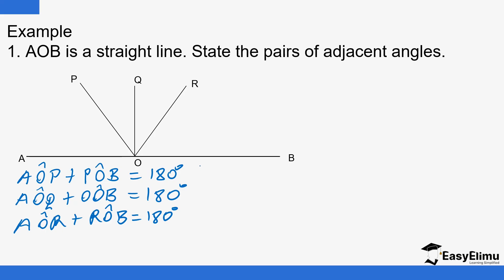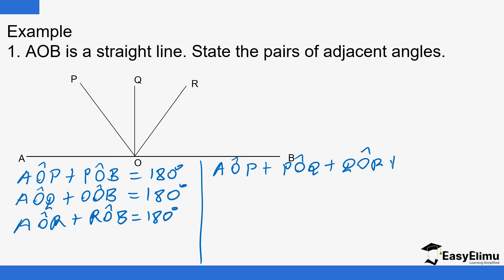As mentioned, if you sum all of them together — AOP plus POQ plus QOR plus ROB — all these will give us 180 degrees. So there could be two or more adjacent angles on a straight line, and they will always sum to 180 degrees.